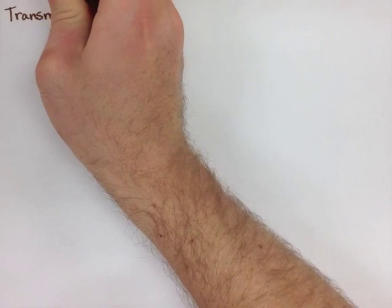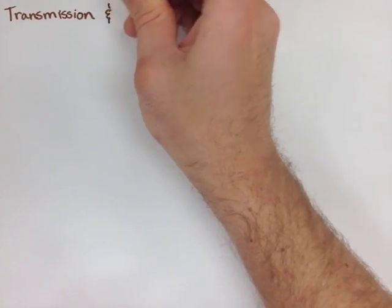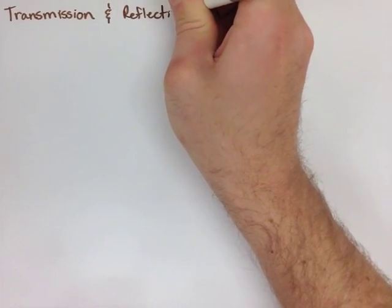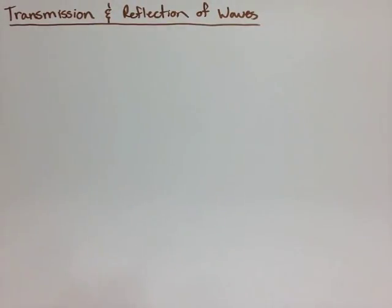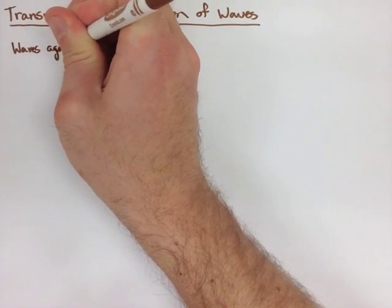When we're looking at the transmission and reflection of waves, really what we're looking at here is how waves react when they either bounce off of a wall, or they go around a corner, or they change mediums.